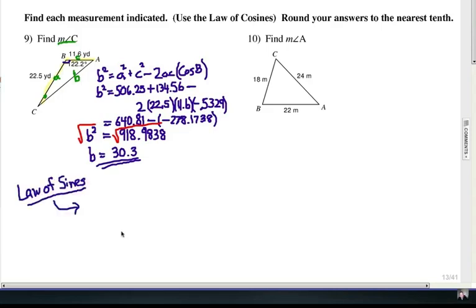So B equals 30.3. Now that's the missing third side. So we use the law of cosines to find a missing third side, and then we put that together in the law of sines to finish. We're looking for angle C, so this is the ratio set we're going to use.